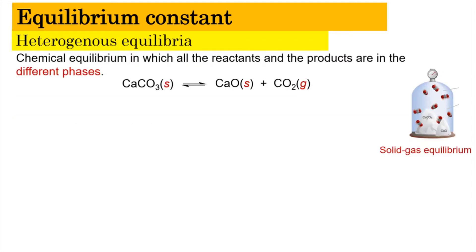Now we're going to look into heterogeneous equilibria. Heterogeneous equilibria exist when the chemical equilibrium involves reactants and products in different phases — they have different states of matter, such as solid and gas. Here is an example of solid-gas equilibrium in which calcium carbonate decomposes to form calcium oxide, which is solid, as well as carbon dioxide, which is in the gaseous state.